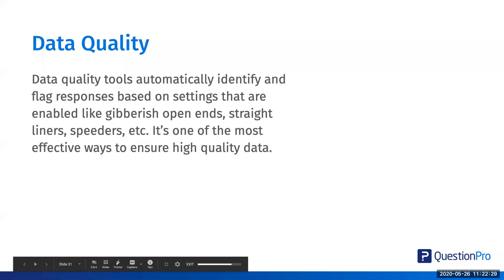Let's talk about data quality. We have built-in data quality tools inside of QuestionPro that you may not have seen, or maybe you're curious how they actually work. They can be used to flag responses based on settings that are enabled — like gibberish open ends, straight liners, speeders, et cetera. It's one of the most effective ways to ensure high quality data and put safeguards in place so that when you get data back, it's actually usable. Inside of QuestionPro, we flag these different answer options accordingly.